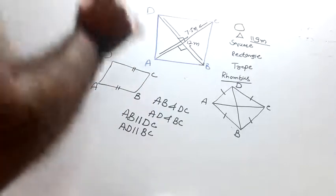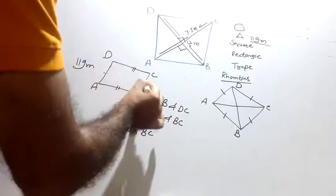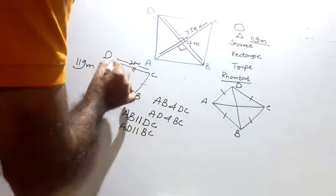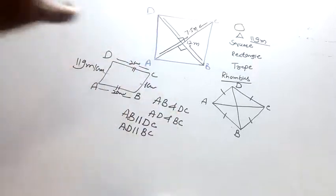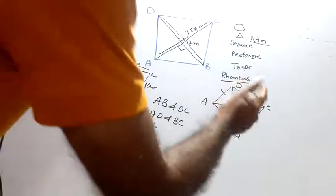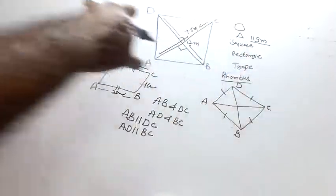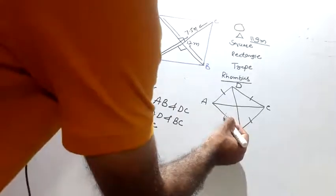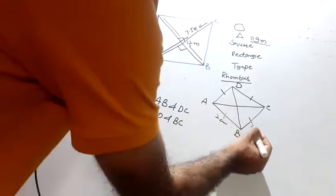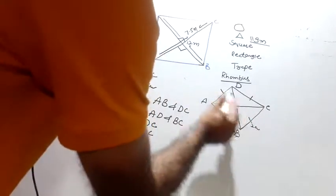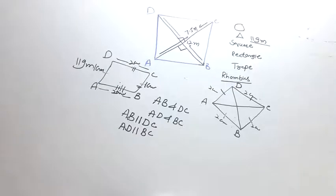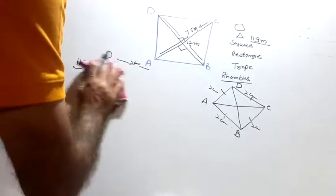Parallelogram property - opposite sides are equal. AB is 2cm, DC is 2cm, AD is 1cm, BC is 1cm. But if all sides are equal, or all adjacent sides are equal, then this is a rhombus. Rhombus means all sides are equal.